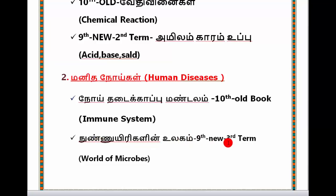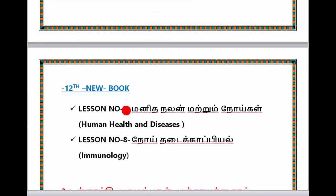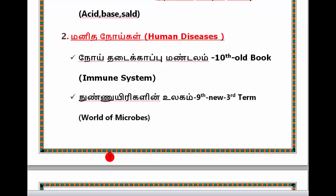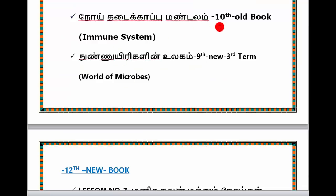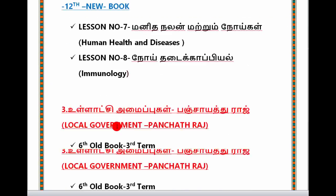The third book is the 9th New Book. This is the 9th book — the topic is World of Microbes. Then the 12th standard New Book, Lesson Number 7 and Lesson Number 8 — that is Human Health and Diseases and Immunology. These two lessons are from the 12th New Book. One topic covers multiple levels and the content is maximum 70% the same, so you can cover this across four levels: 10th Old Book, 9th New Book, and 12th New Book 7th lesson.